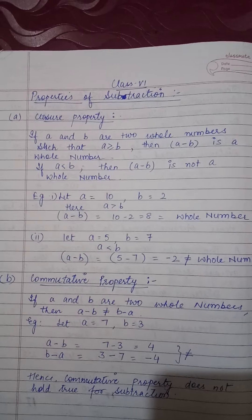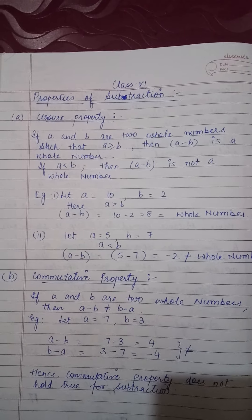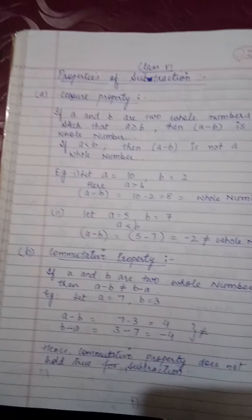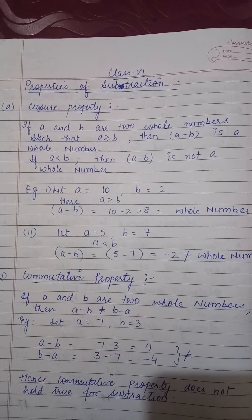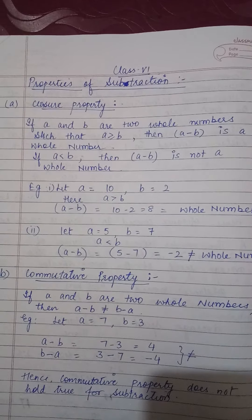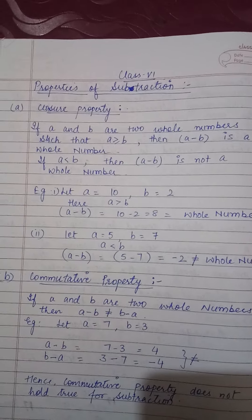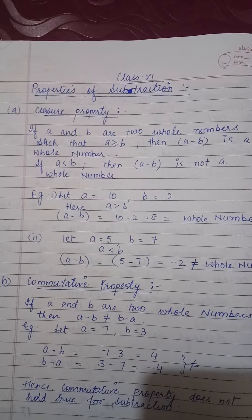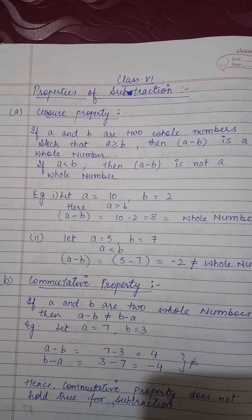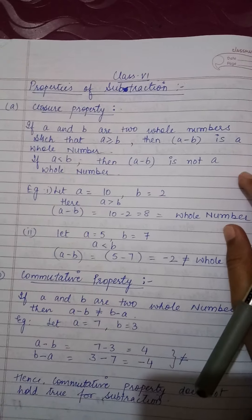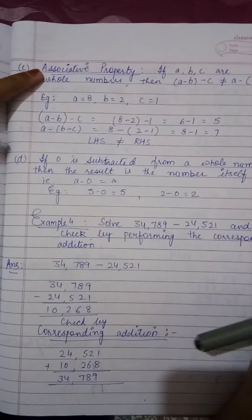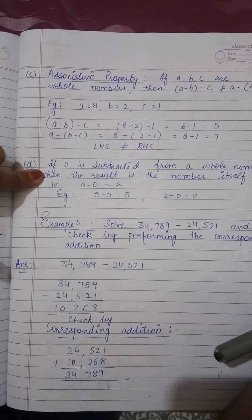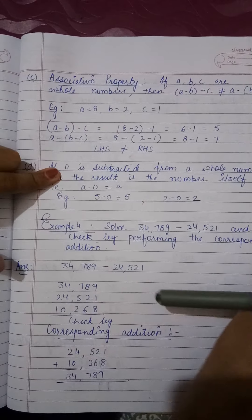Hello everyone, today we are going to start with the next topic: properties of subtraction. In the previous lecture we have done the properties of addition. We have done four properties of addition and today again we are going to do the four properties of subtraction. These four properties are: closure property, commutative property, associative property, and the next one is regarding zero.